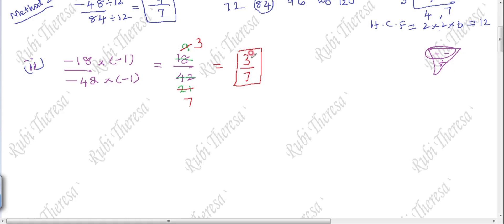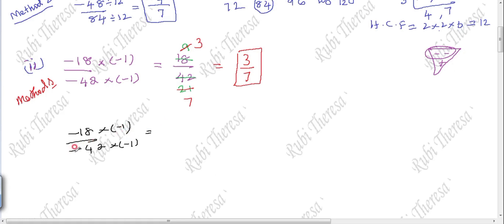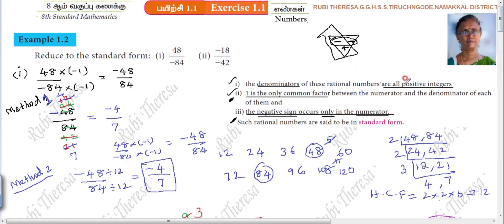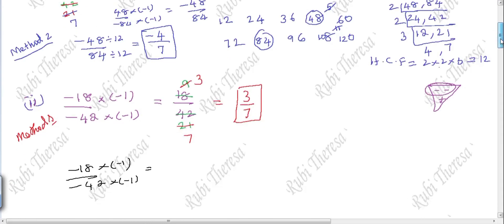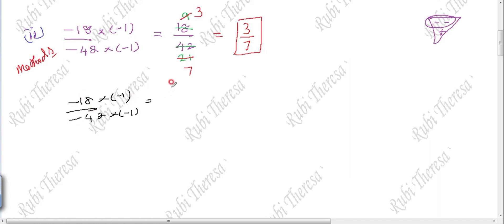So 3 by 7 is the standard reduced form. Method two: minus 18 divided by minus 42. Both numerator and denominators are multiplied by minus 1 to remove the minus in the denominator — that is the rule. So you get 18 by 42, and now you find the HCF.